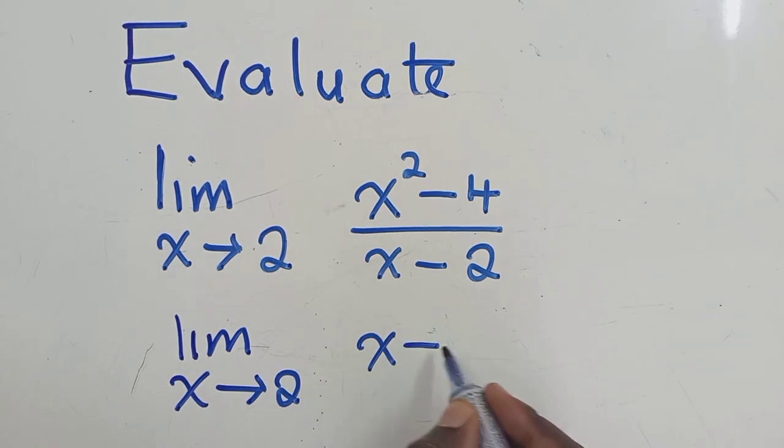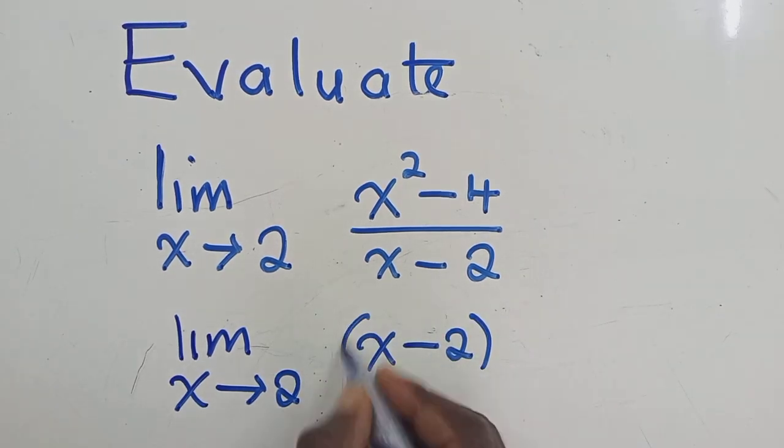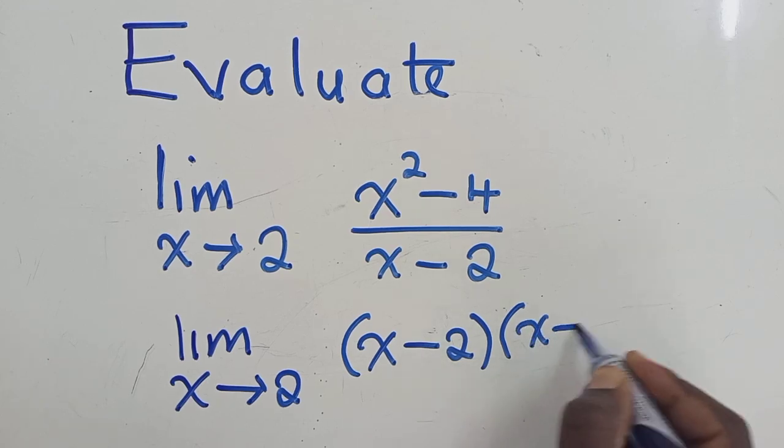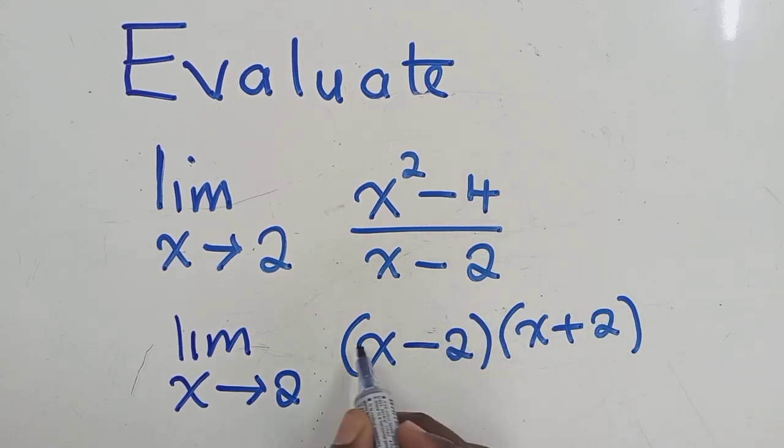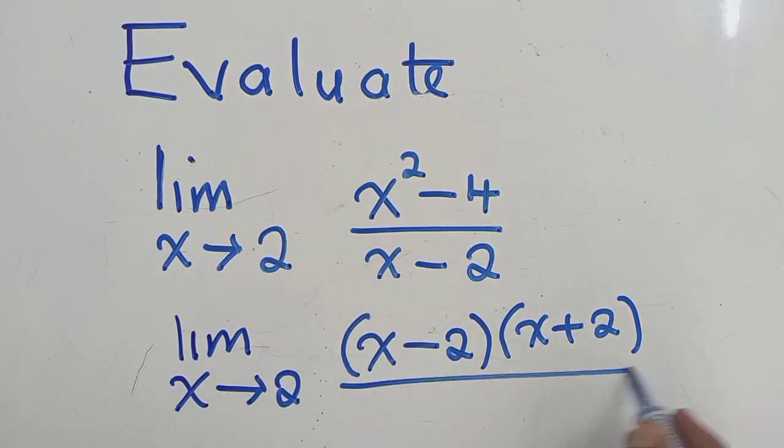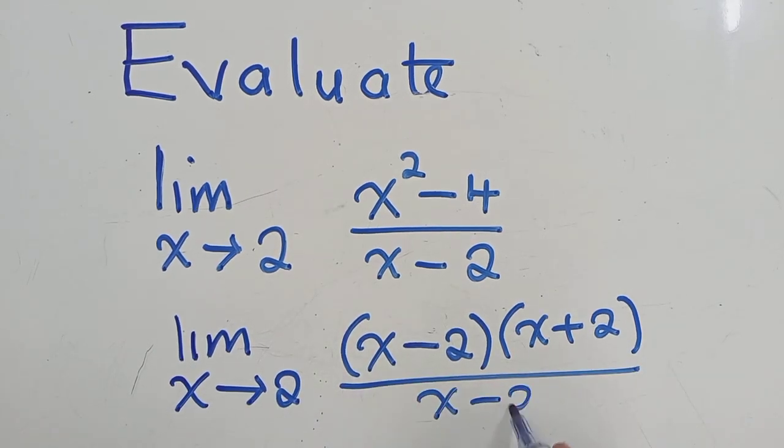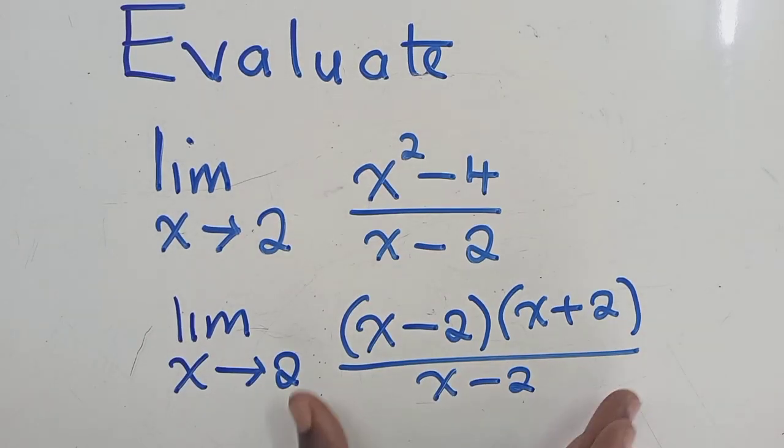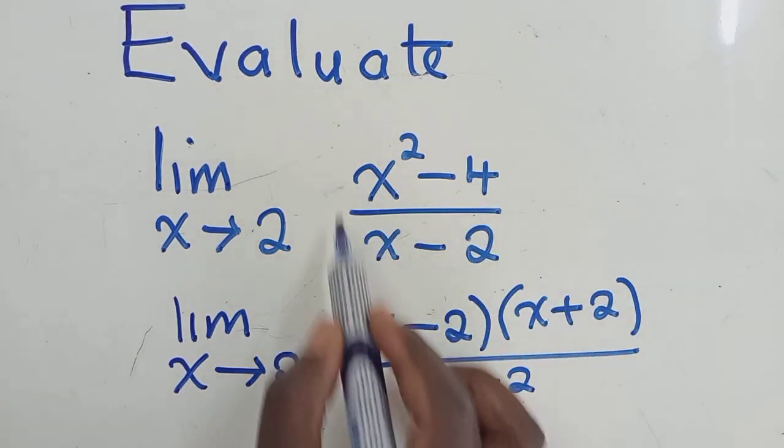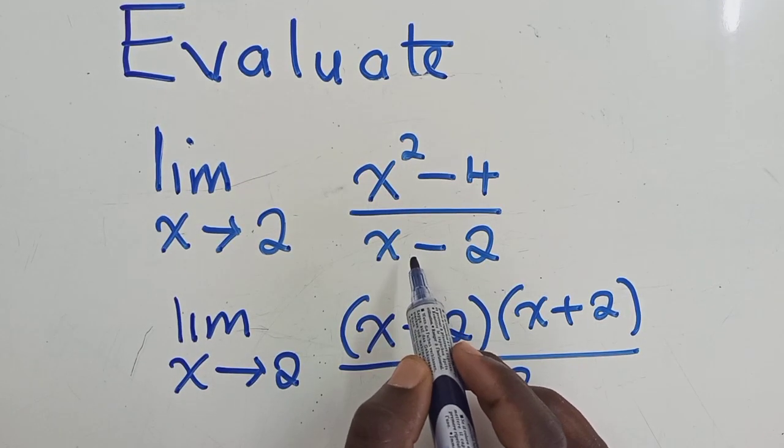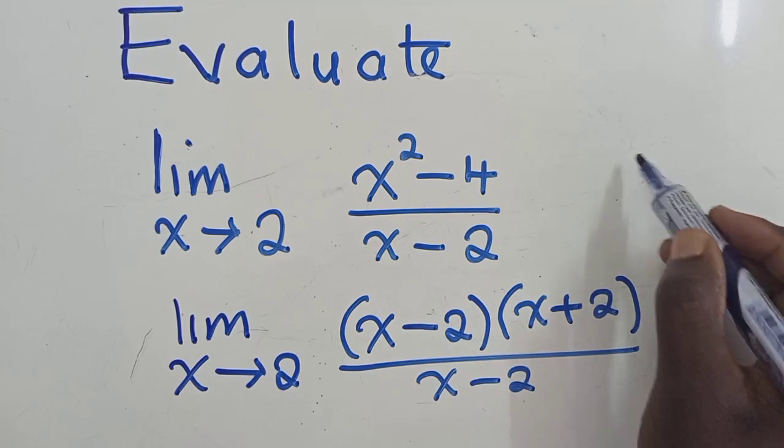So here we can use the idea of difference of 2 squares. So what I have here and what is here the same, this is what we call difference of 2 squares. So this expression right here is the same as what we have here. And how does difference of 2 squares work?